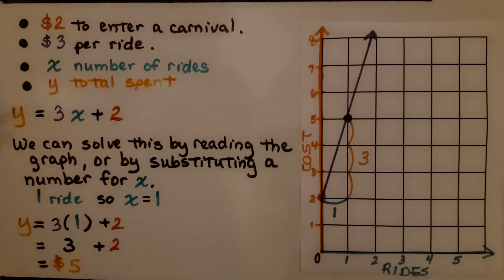Here we have an equation, y = 3x + 2. We're going to say that the 2 is $2 to enter a carnival. The 3 is $3 per ride, x is going to be the number of rides, and y is going to be the total spent. Now we can solve this by reading the graph, or making a graph, or we could substitute a number for x.